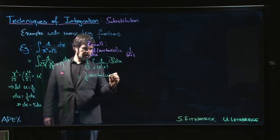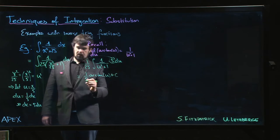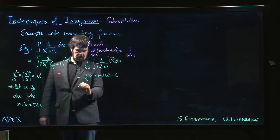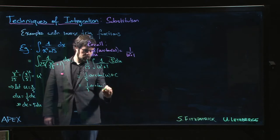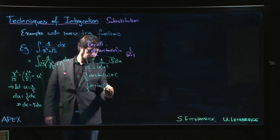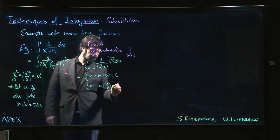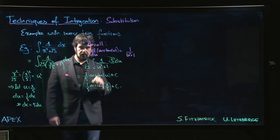So all that's left to do is put back in that u is x/5, and we have (1/5)arctan(x/5).